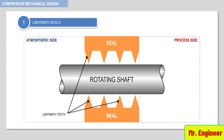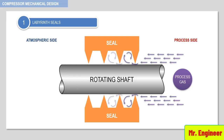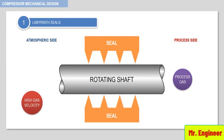As depicted in this example, when the process gas enters the space between the teeth, it slows down and changes direction. The resulting turbulence created restricts the flow of gas. However, if the gas velocity is very high, some of the gas does not change direction in a simple labyrinth seal and passes in a straight line between the teeth and the shaft, as depicted here.